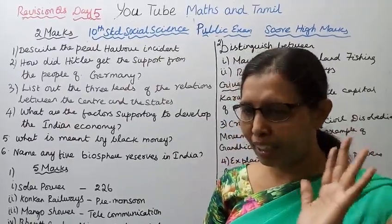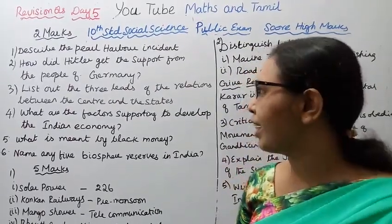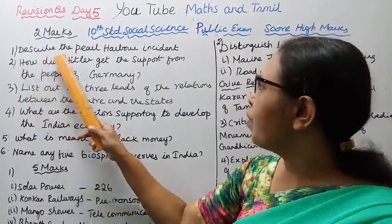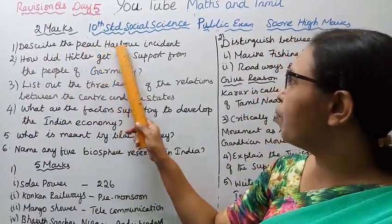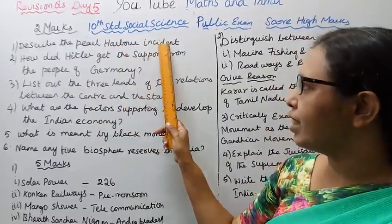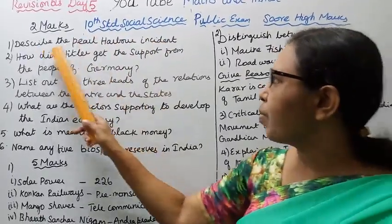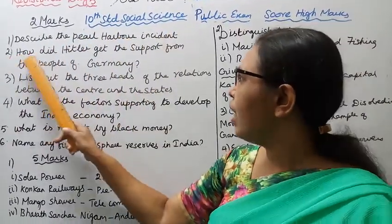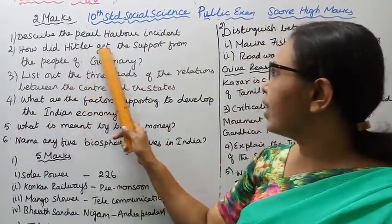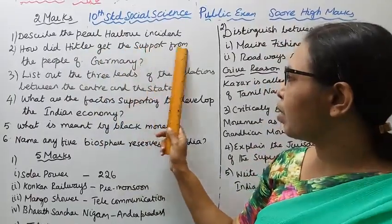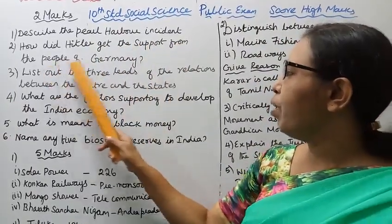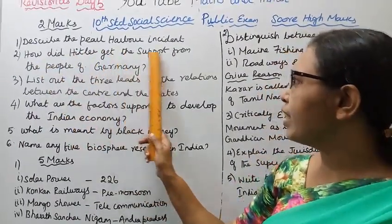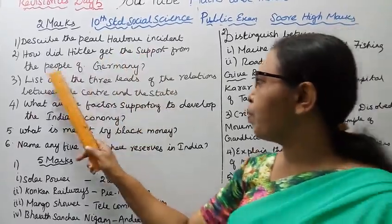Two marks: First, describe the Pearl Harbor incident. Second, how did Hitler get the support from the people of Germany?